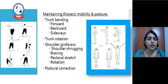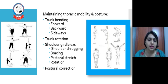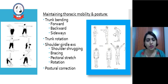Maintaining thoracic mobility and posture includes trunk bending forward, backward and sideways, trunk rotation, shoulder girdle exercises such as shoulder shrugging, bracing, pectoral stretch, rotation and postural correction.